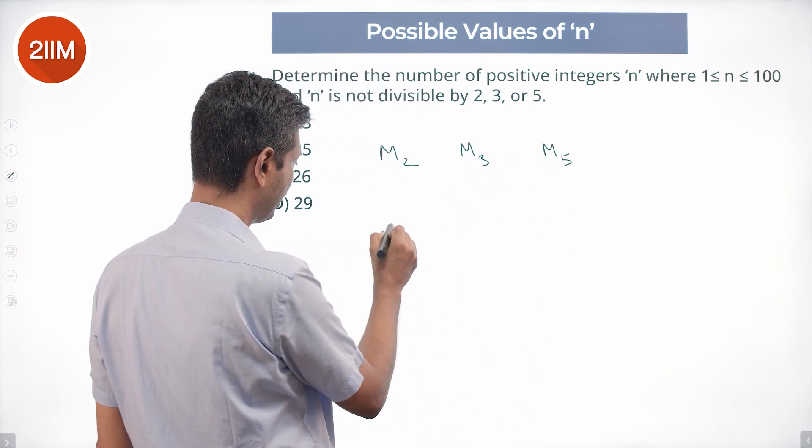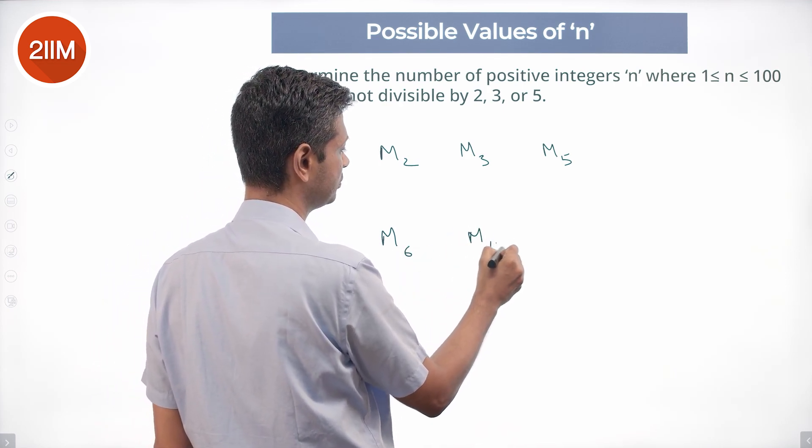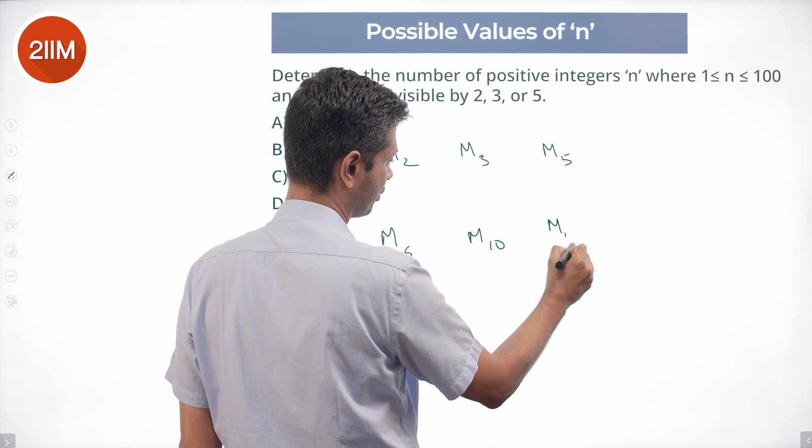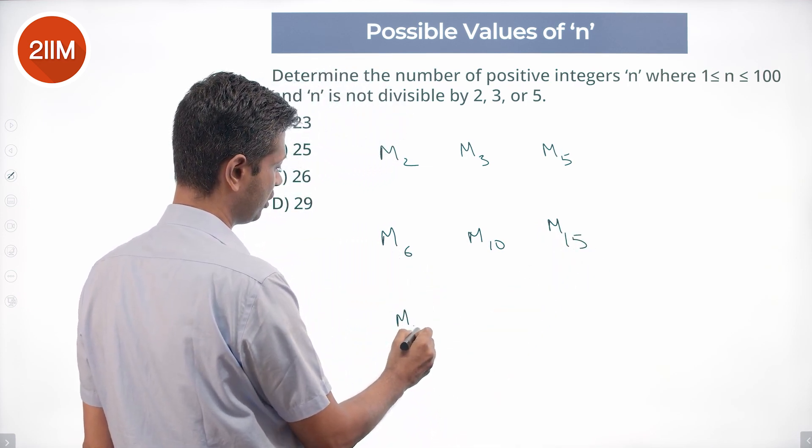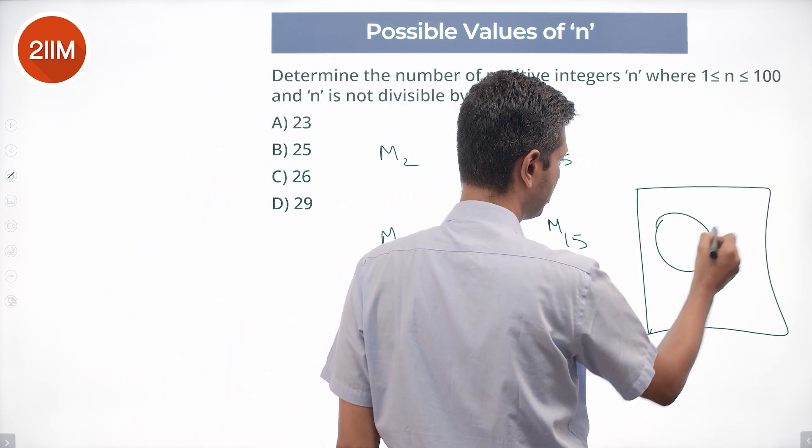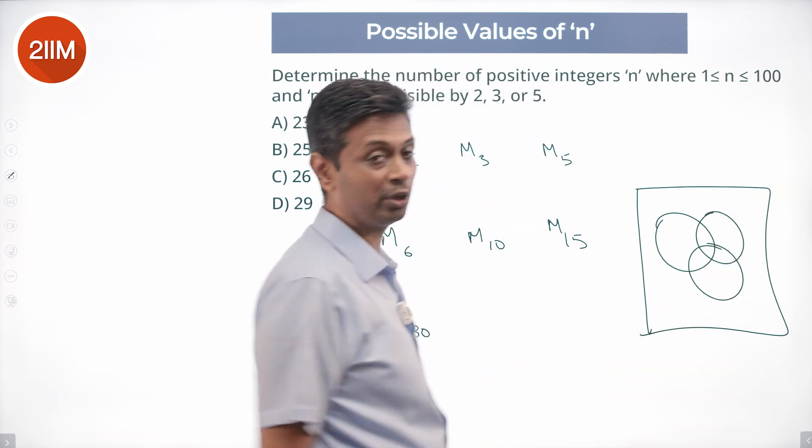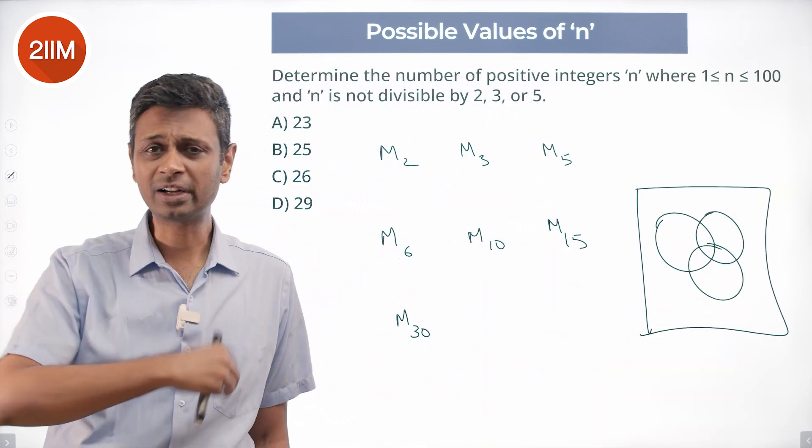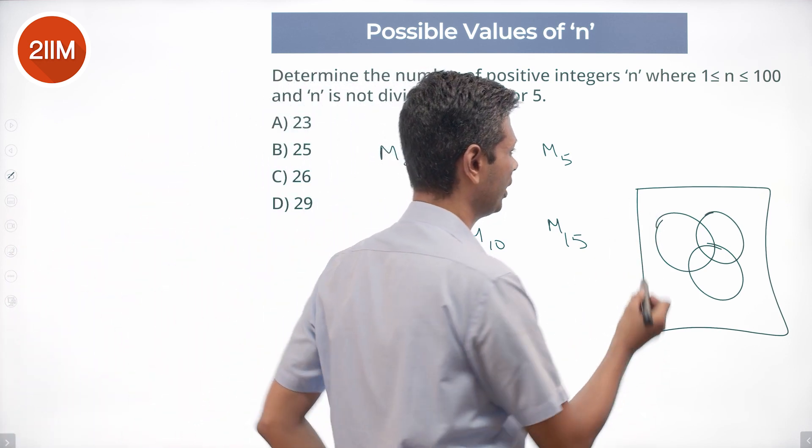Then find 2 intersection 3, 2 intersection 5, 3 intersection 5, and 2 intersection 3 intersection 5. We are effectively saying from 1 to 100, find multiples of 2, multiples of 3, multiples of 5, find A union B union C, subtract from 100, and we're through.